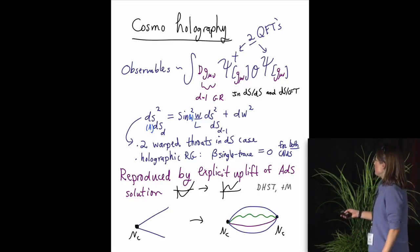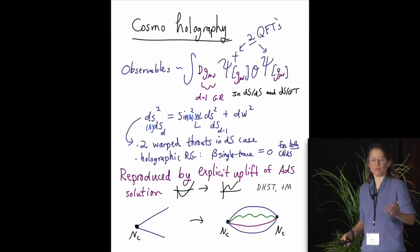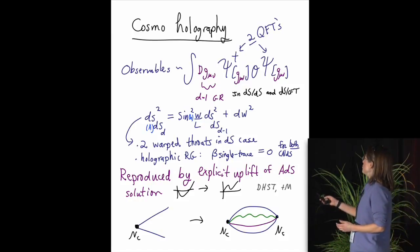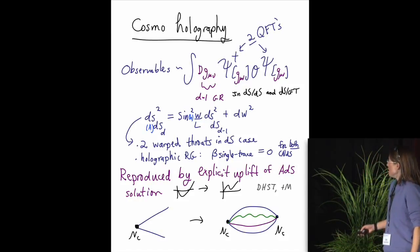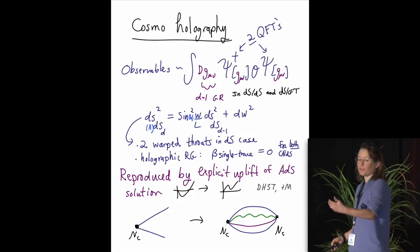And if one does a so-called holographic or normalization group treatment of this problem, one can learn a bit more about the field theories involved, and one finds that just as in ADS, the single trace beta functions are zero. So we have some clues, in other words, to the nature of the dual theories.